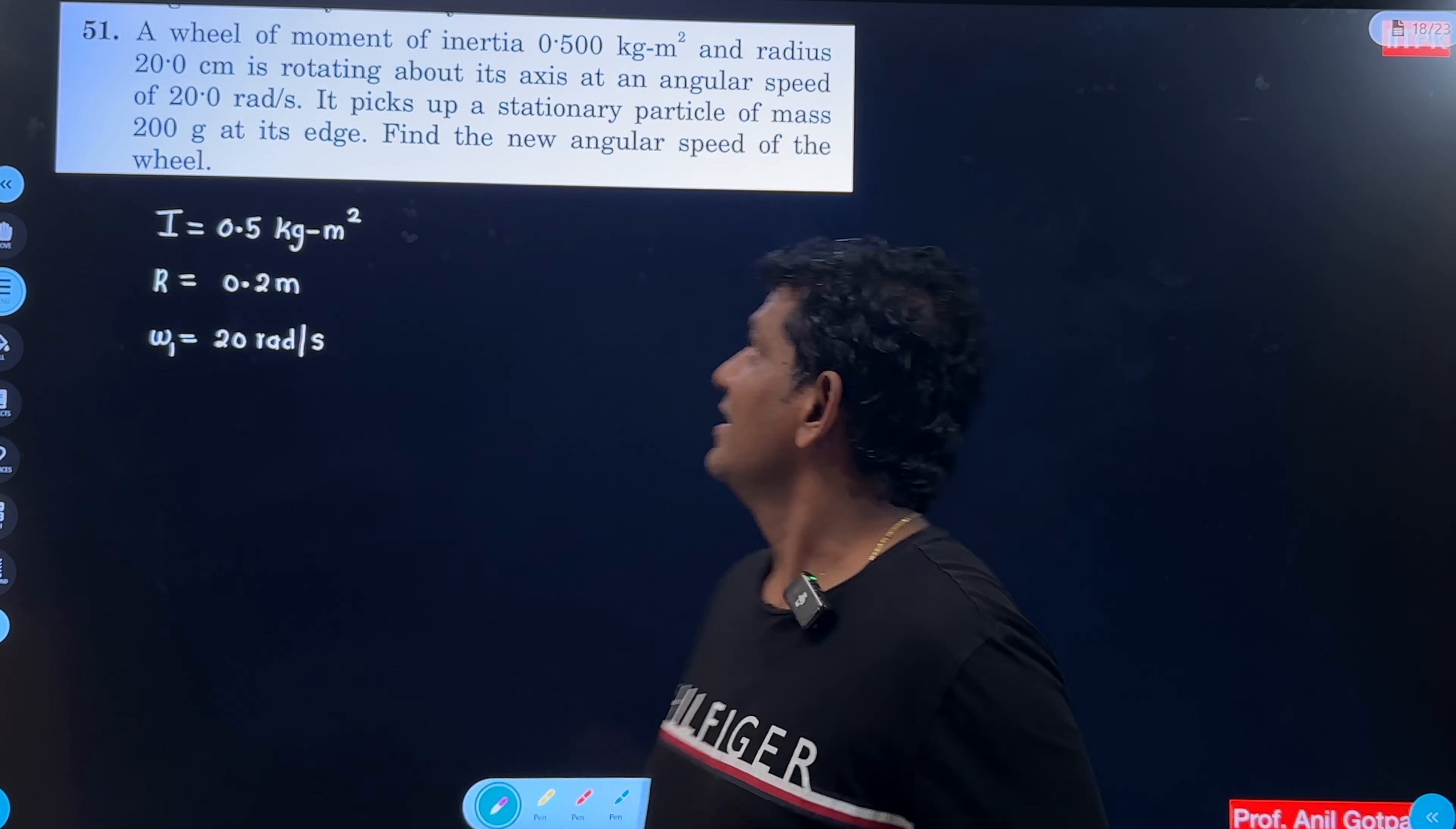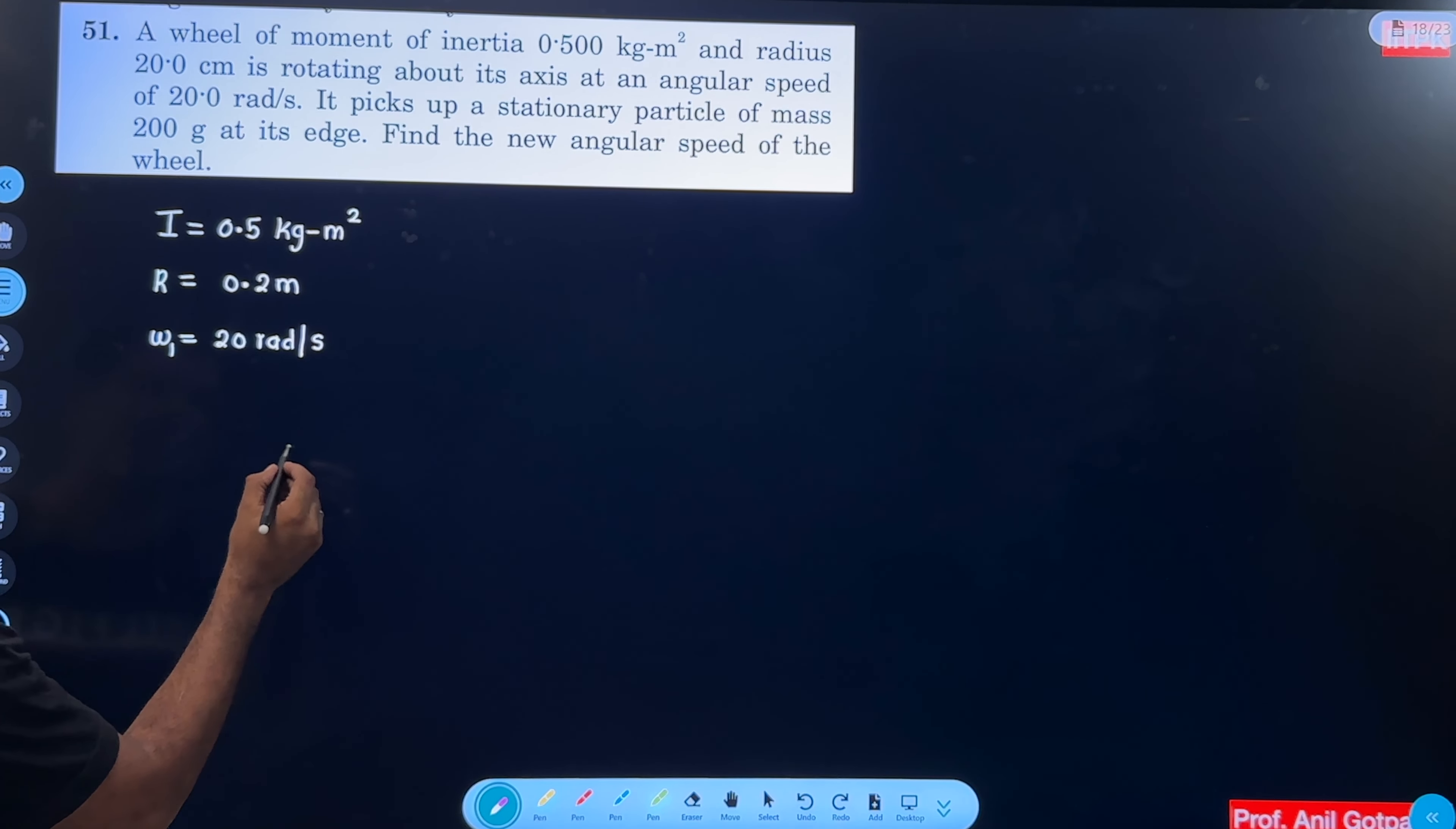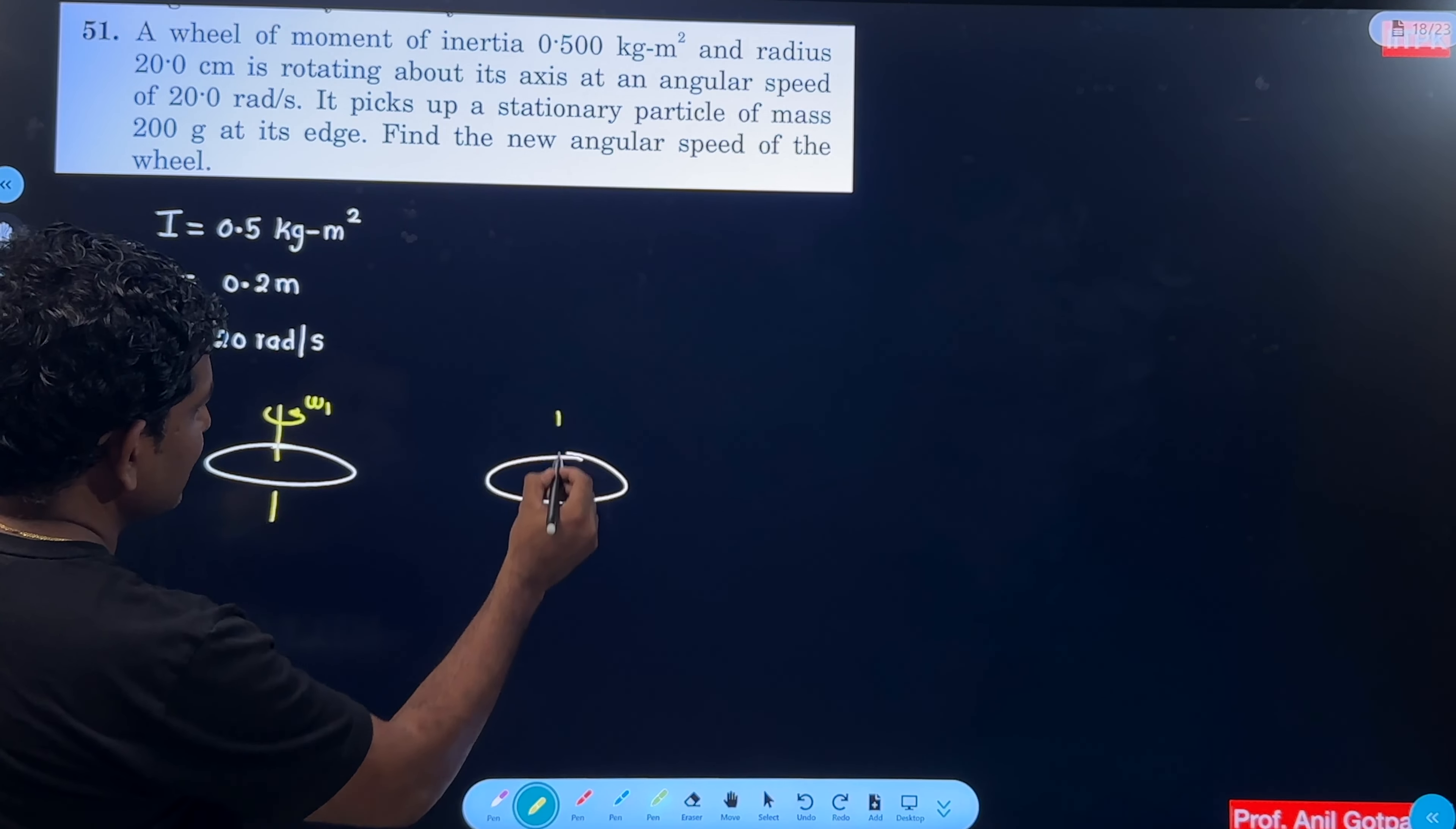It picks up a stationary particle of mass 200 gram at its edge. What does that mean? Initially, the wheel was rotating like this with some angular speed omega 1. What happened after this wheel? It picks up a stationary particle.